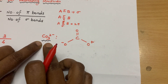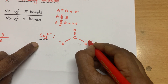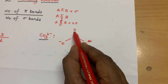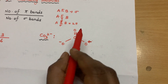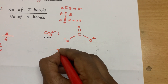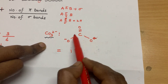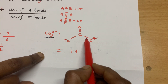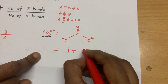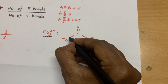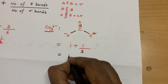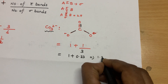For CO3²⁻: first write the Lewis structure correctly. Carbon valency is 4, oxygen valency is 2, and the remaining two minus charges go on two oxygen atoms. Apply the same trick: 1 pi bond and 3 sigma bonds. So: 1 plus 1 divided by 3 equals 1 plus 0.33 equals 1.33. The bond order for CO3²⁻ is 1.33.